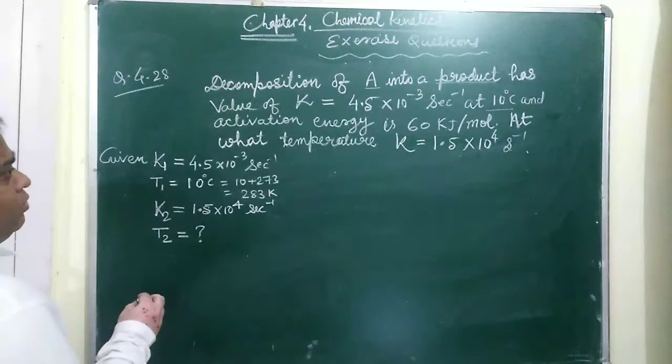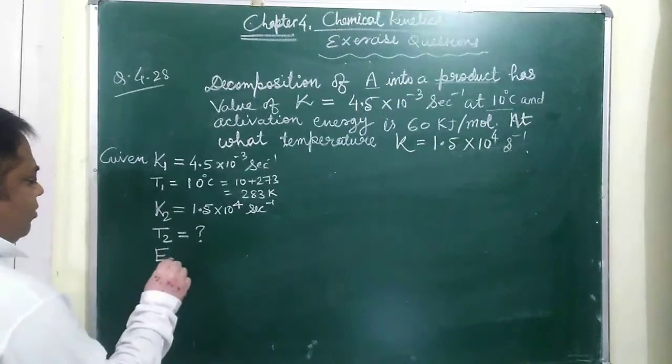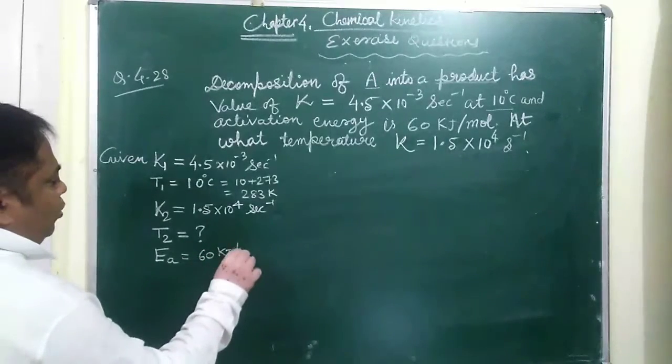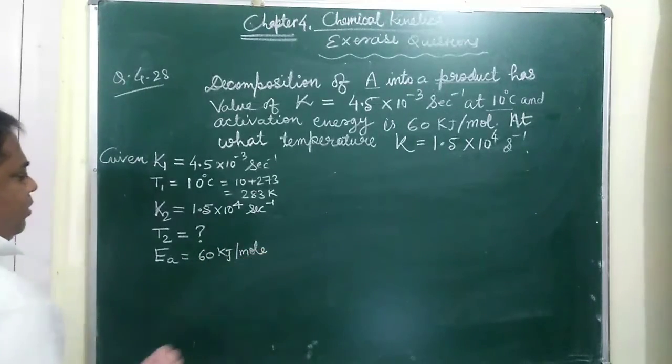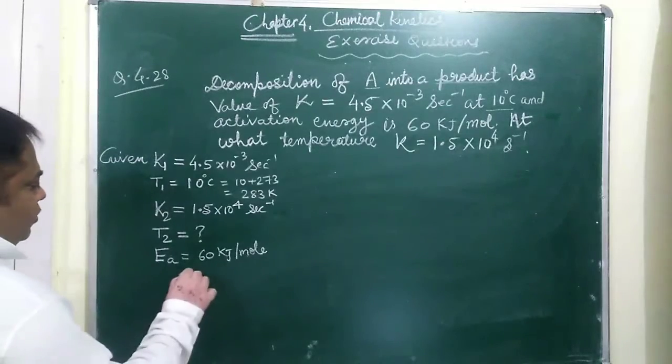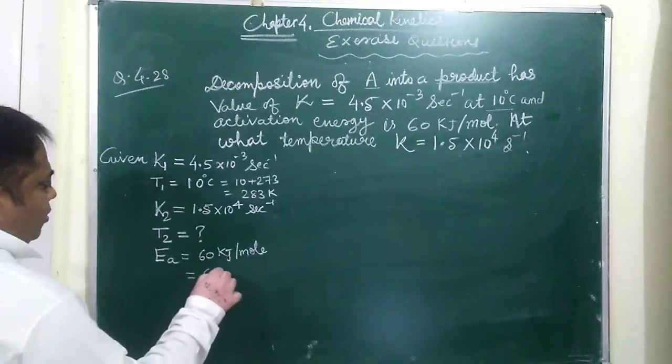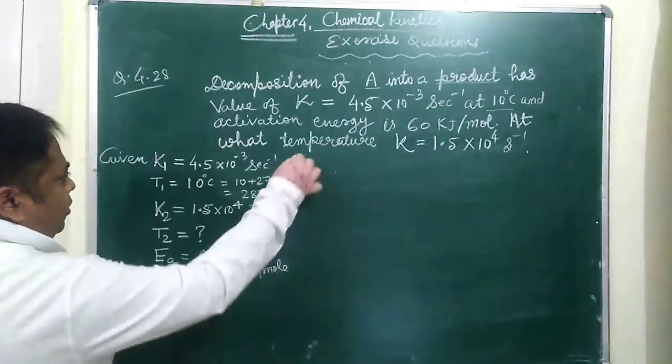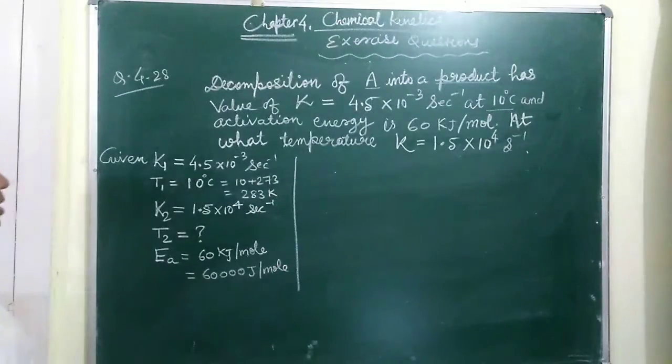We have been given the value of activation energy Ea is equal to 60 kilojoule per mole but since we will be using the value of R in terms of Joule, so we will convert it into Joule. It will be 60,000 Joule per mole. Now we will put the value and get the answer.